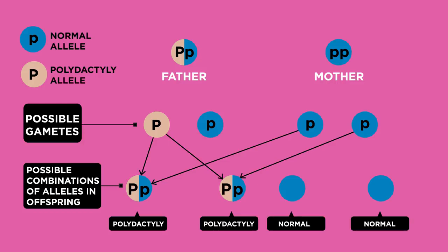Can you see what their genotype must be? Little p, little p. So two copies of the recessive allele.